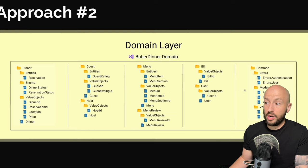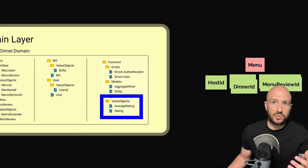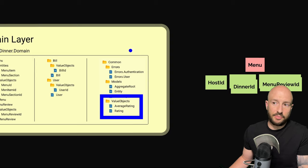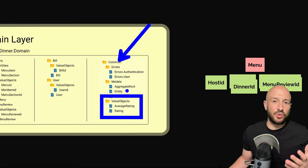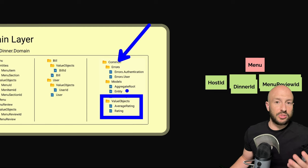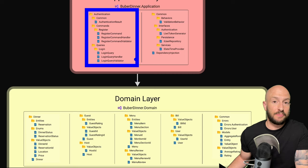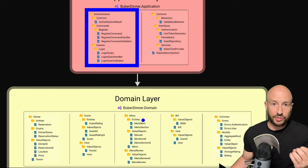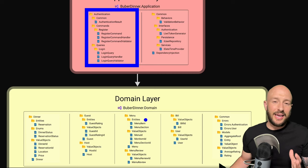Now you might be asking what happens with things that really are common. For example, we have the average rating and the rating — something that both the guest, the host, and the menu are going to have. You can simply go to the common folder and create whatever common logic there. I like to ask myself: is it really something that's generic for many components? Sometimes it really isn't, and it will be easier in the long run to simply duplicate the same class into two different aggregates — that way they're not coupled together and each can grow on its own. Looking at our application layer next to our domain layer, both are split by feature. So if someone looks at our system and is curious about what happens inside, all they need to do is look at the folders — compared to the other approach split by type, it would be much harder.